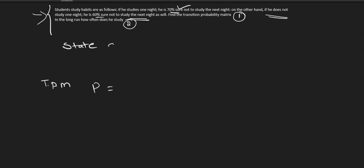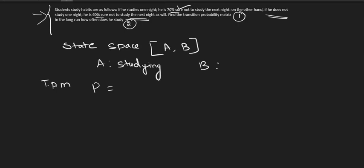The state space is nothing but — here, only two state spaces are there: A and B. A refers to studying and B refers to not studying. So we are discussing only two cases, and we have only two state spaces.